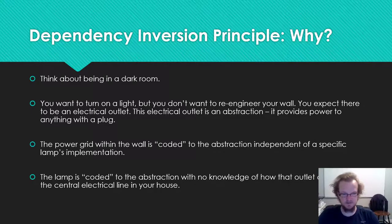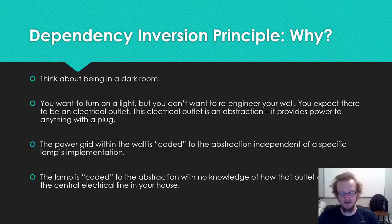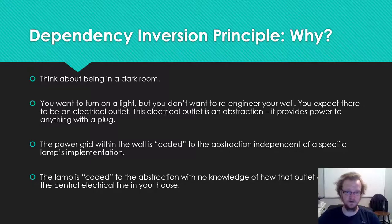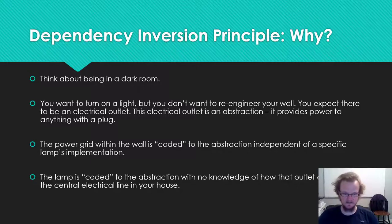That is the whole point of Dependency Inversion: you want junction points to be abstractions that either side of the boundary can be coded to. If you adhere well to dependency inversion, it is a pattern that makes integration during implementation much easier, because you know there is a standard abstraction that allows you to pass data through from one side of the boundary to the other.